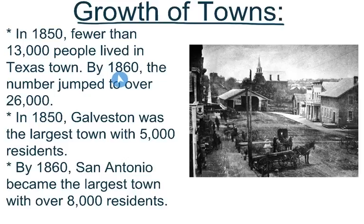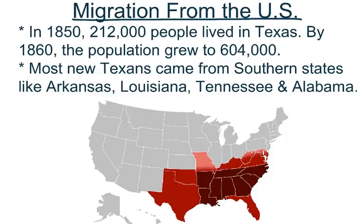By the year 1850, fewer than 13,000 people lived in Texas towns, but by 1860 that number jumped to over 26,000, nearly doubling in 10 years. In 1850, Galveston was the largest town in Texas with 5,000 residents, but by 1860 San Antonio became the largest town with over 8,000 residents.